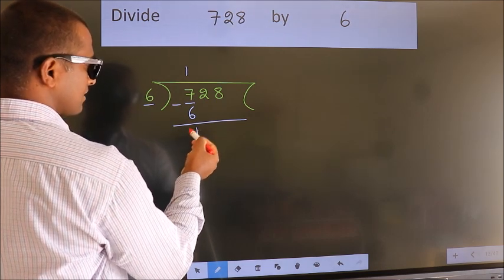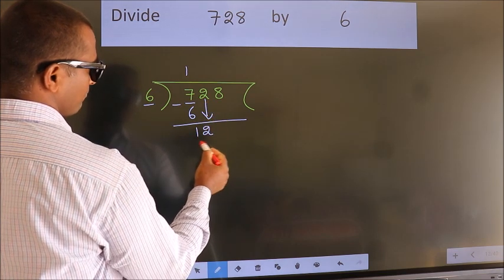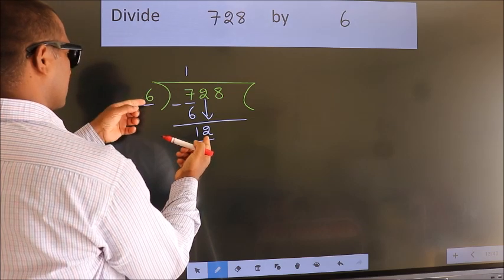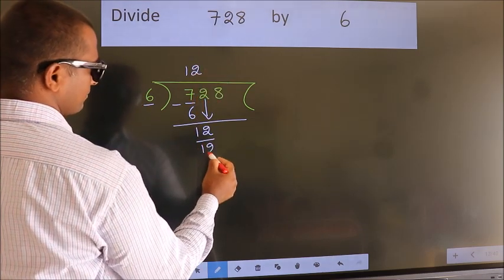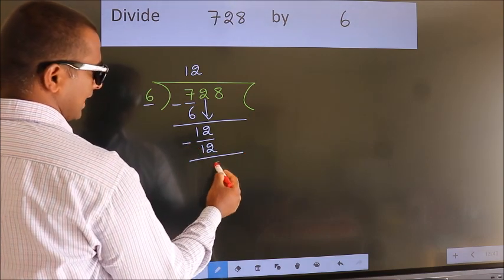After this, bring down the next number. So 2 down. So 12. When do we get 12? In the 6 table, 6 times 2 is 12. Now we subtract, we get 0.